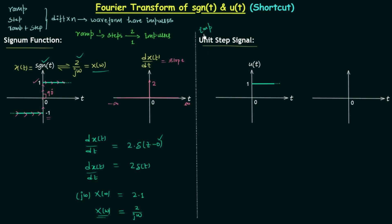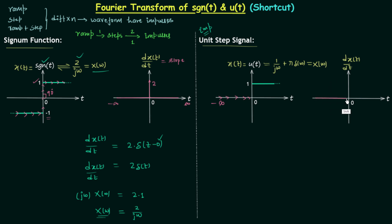This second example is important because we will understand one very important point related to this method. In the last lecture we found the Fourier transform of the unit step u(t) equals 1/jω + π·δ(ω). Let x(t) = u(t), with Fourier transform X(ω). We differentiate u(t) once. Starting from minus infinity, u(t) = 0, so the slope is 0, giving dx(t)/dt = 0 from minus infinity to 0.